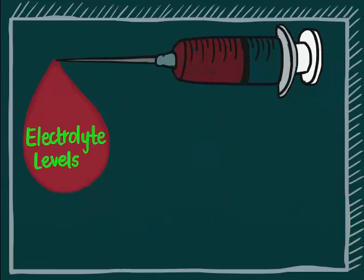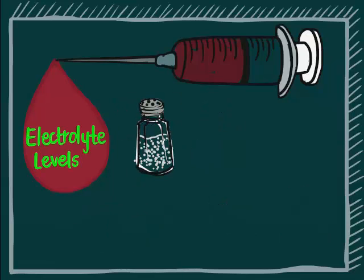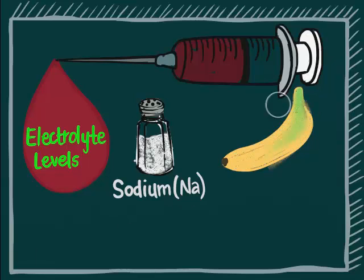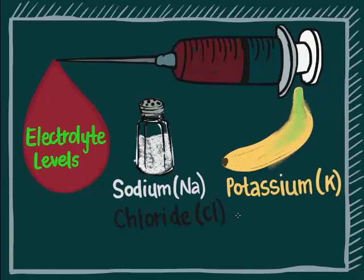Electrolyte levels. Some examples of electrolytes include sodium, potassium, and chloride. Electrolytes are tightly regulated in your body, and abnormalities in the levels of electrolytes can indicate problems.